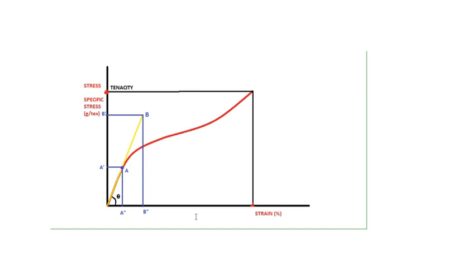So now let us see what is initial modulus. Initial modulus is tan theta, which is A'' divided by A' — that is stress divided by strain. At any point in the initial region it will be the same: B'' divided by B'. This is your initial modulus. It is a very important term describing how your material behaves initially in any particular application — very important in technical textiles.